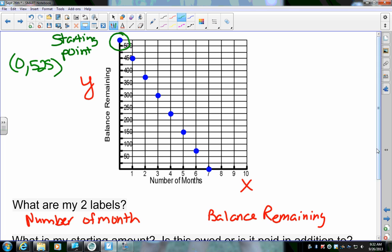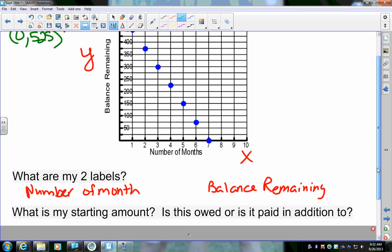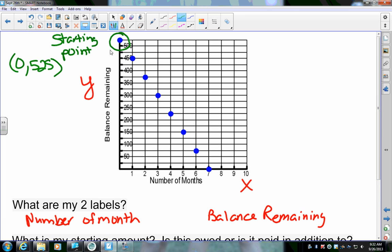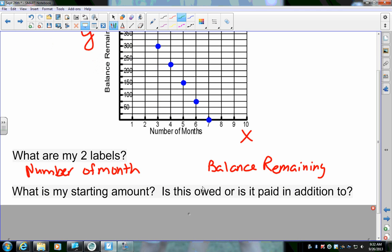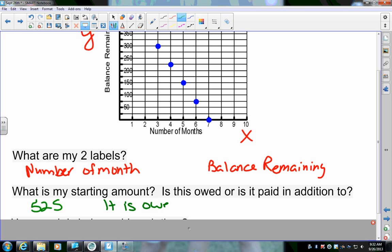Now, it asked us, is it owed or paid in addition to? So, are we starting at 525 and paying, like getting more money? No. This is something that's going down. So, as we're starting here, that's money that we're borrowing or getting from somebody. So, right here, we've got, my starting amount is 525 and it is owed. I know it's owed because my rate of change is going down. I'm taking away from that amount.